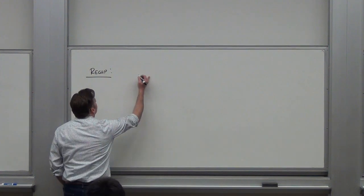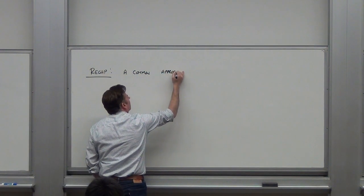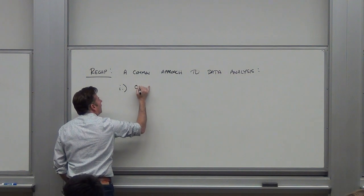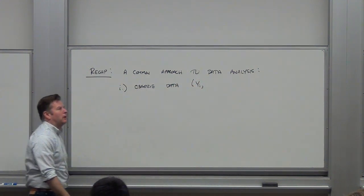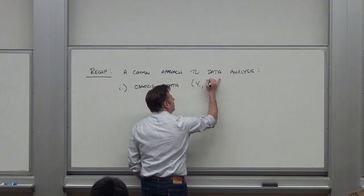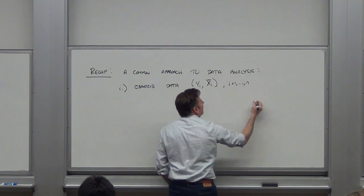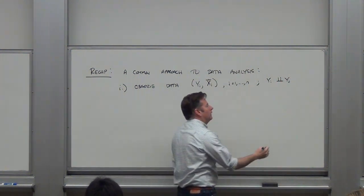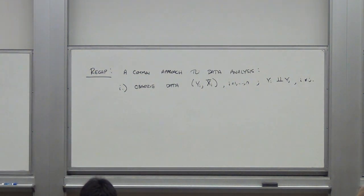If you think about a common approach to data analysis, you observe data — a univariate response yi, and then some vector of covariates xi, for i equal 1 to n, with yi independent of yj. We're going to very quickly extend this to a vector game so that we observe a multivariate y on the course.